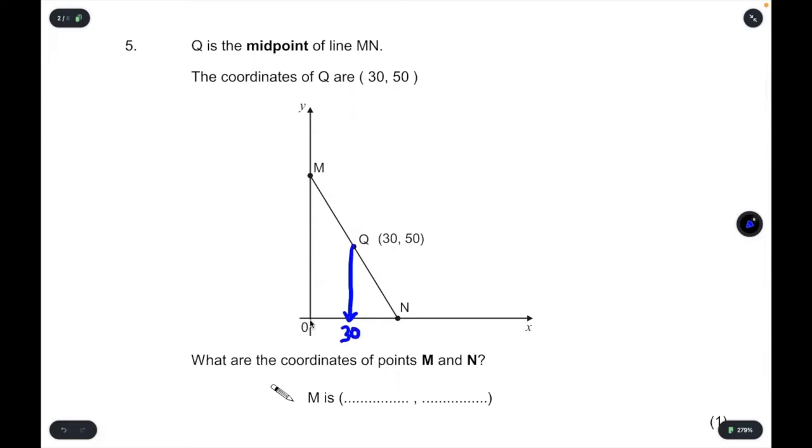So we are asked to find the coordinates of points M and N. So for Q, the x-coordinate is 30. That means on the horizontal axis, this is 30. This is halfway between 0, the origin and the point N, meaning that 30 is the halfway point of what would be here, 60. And meanwhile, on the y-axis, the y-coordinate of Q is said to be 50. So if this is 50, and again, it's halfway up, then M must be double 50, M must be 100.